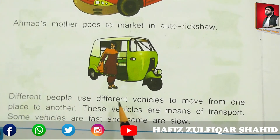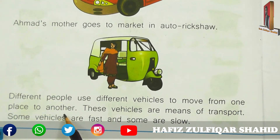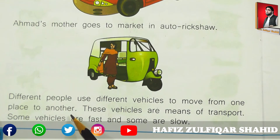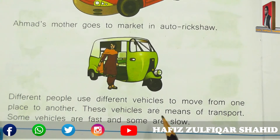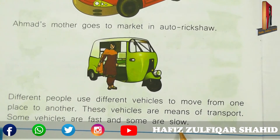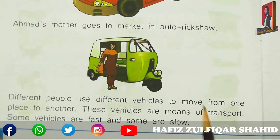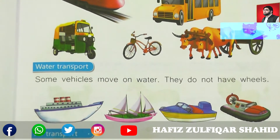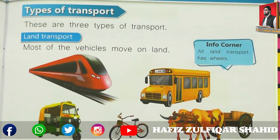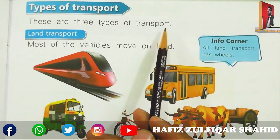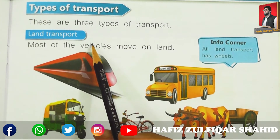Different people use different vehicles to move from one place to another. مختلف لوگ مختلف قسم کی transport کا استعمال کرتے ہیں تاکہ وہ ایک جگہ سے دوسری جگہ جا سکیں. These vehicles are means of transport. Some vehicles are fast and some are slow. کچھ ایسی گاڑیاں ہیں جو بہت تیز چلتی ہیں اور کچھ آہستہ چلتی ہیں. Now let's see how many types of transport there are. Move on to page number 35 — Types of Transport. These are three types of transport.